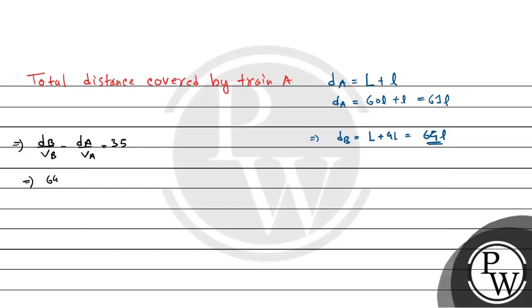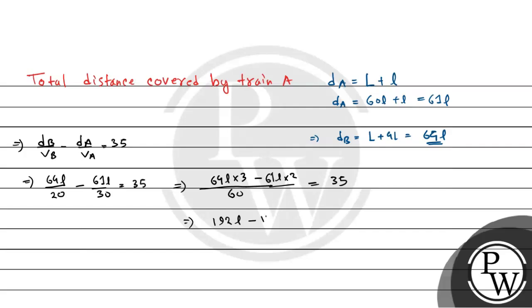Now let's solve. This gives us: D_B / V_B minus D_A / V_A equals 35, that is 64L / 20 minus 61L / 30 equals 35. Simplifying: (192L minus 122L) / 60 equals 35, which gives 70L / 60 equals 35. Solving, L equals 30.